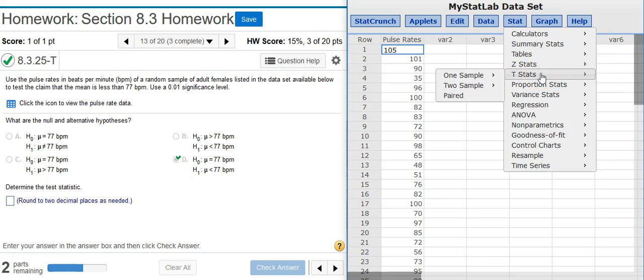which is, do we know what the population standard deviation is? In this case, we don't know what it is. There's nothing to indicate what it is in the problem statement. So that means we need to use the student T distribution. So I'm going to select T Stats, one sample, because I've only got the one sample, with data, because I have actual data in StatCrunch.